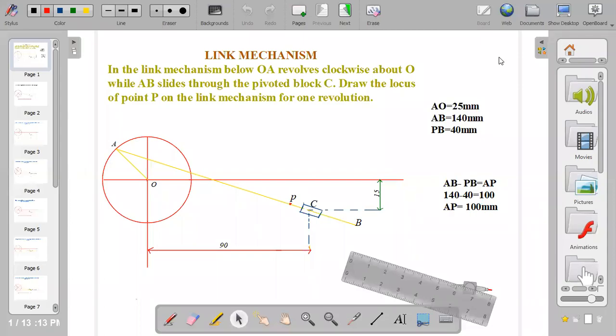Link mechanism: In the link mechanism below, OA revolves clockwise about O while AB slides through the pivoted block C. Draw the locus of point P on the link mechanism for one revolution.